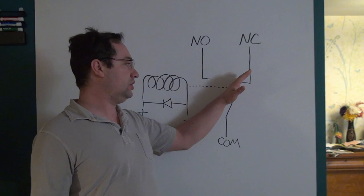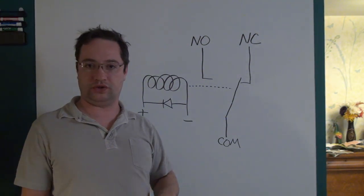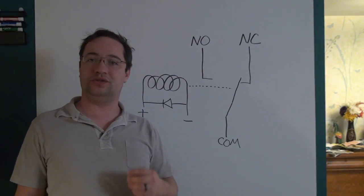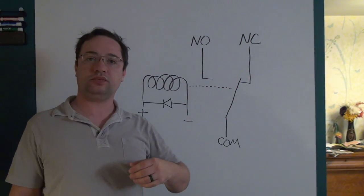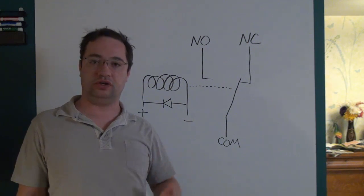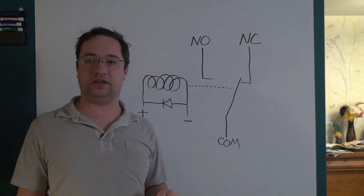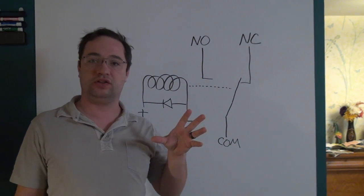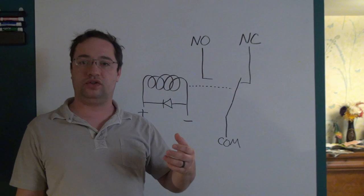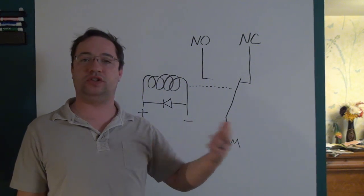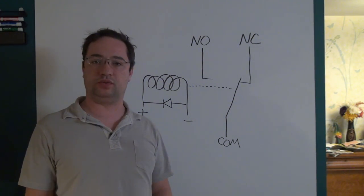If you're using DC and current is flowing, when the contact starts to move, the DC current will continue to flow until the gap between the arm and the fixed contact becomes large enough that it can no longer sustain the arc and the arc goes out. But this time is substantially longer — probably by an order of magnitude — than what happens with AC.